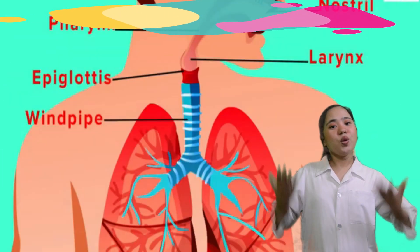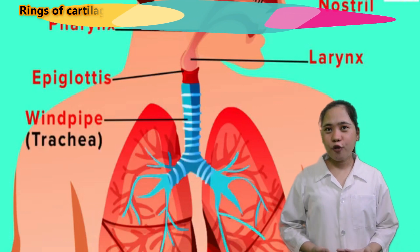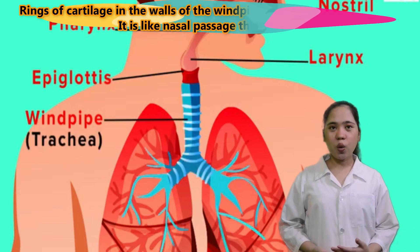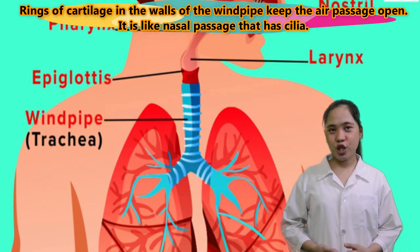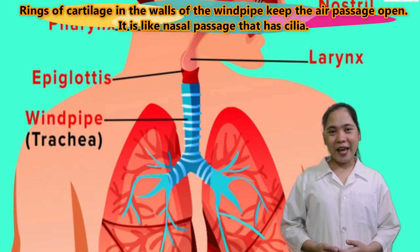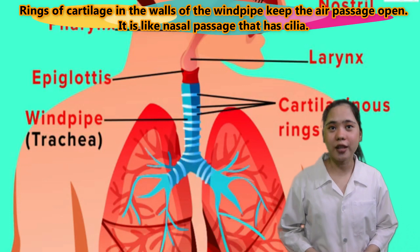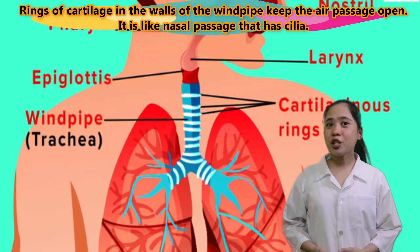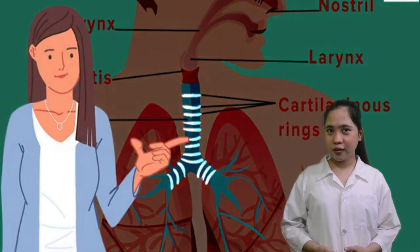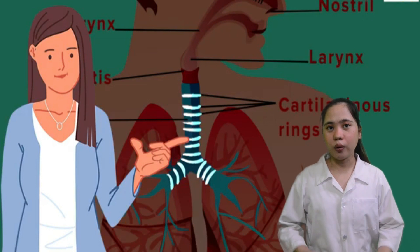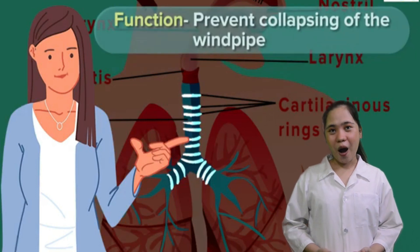We also have the trachea. Rings of cartilage in the walls of the windpipe keep the air passage open. Like the nasal passage, it has cilia that push mucus and any other material toward the throat, where mucus is coughed out.